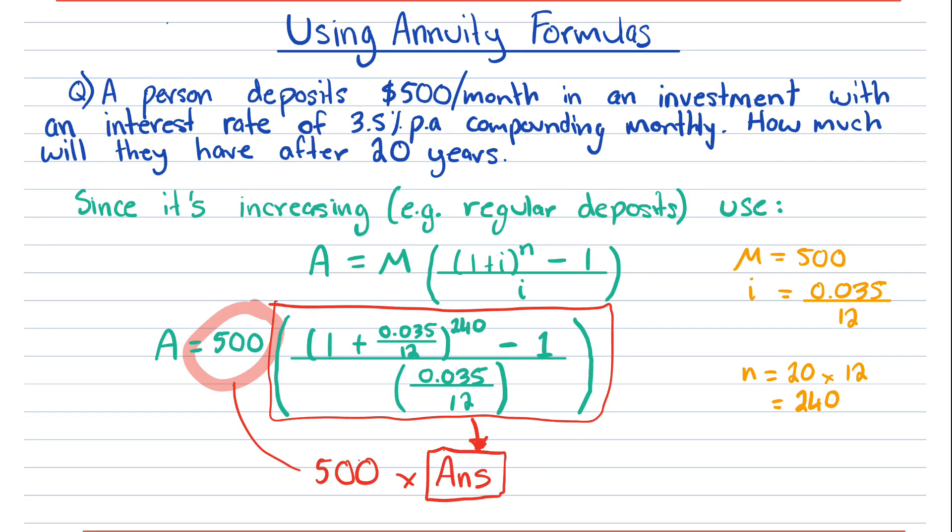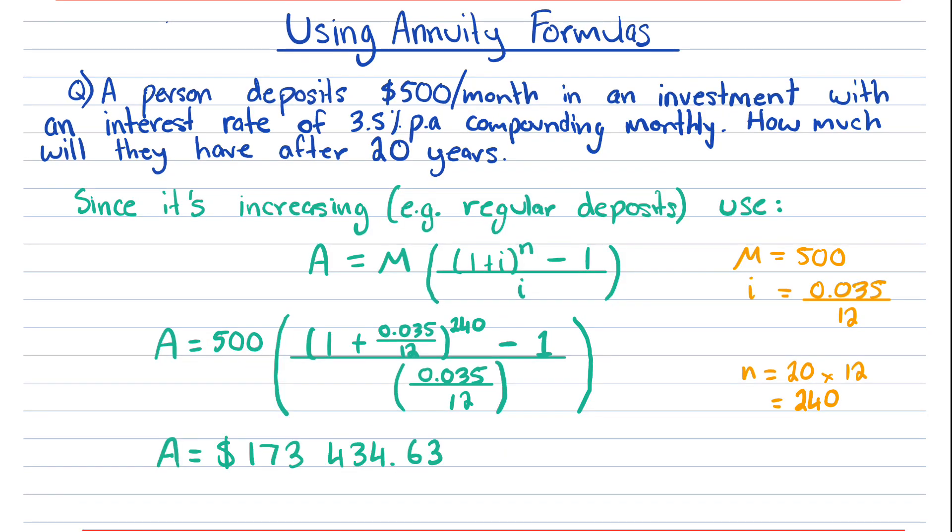So instead of doing it all in one single step in your calculator, you can do it in three steps and it reduces the risk of error. The amount we get is $173,434.63.